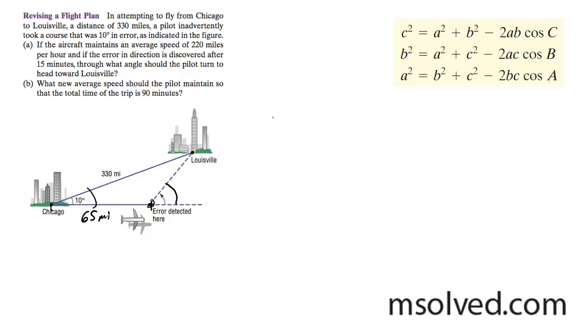So I'm just going to call this A. And we're going to have A squared is equal to 65 squared plus 330 squared minus 2 times 65 times 330 times the cosine of 10 degrees. And what this gets me is A squared is equal to 70,876.745. And I take the square root of both sides, I get A is equal to 266.2 miles.